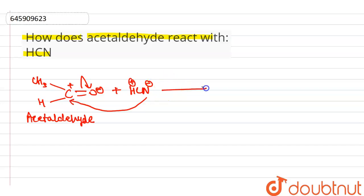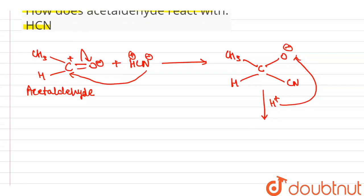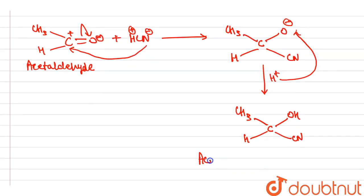Then our product is CH3CHO negative and attack in this side CN. Now H plus will be attacked on negative part. Then our product is CH3CHOH CN. And that is our acetaldehyde cyanohydrin.